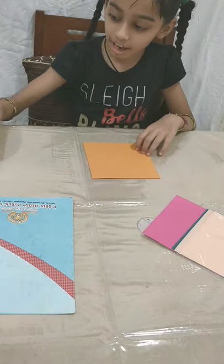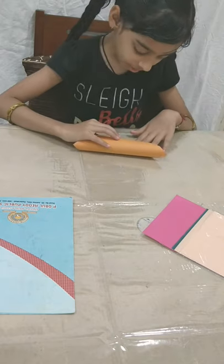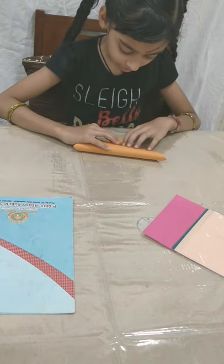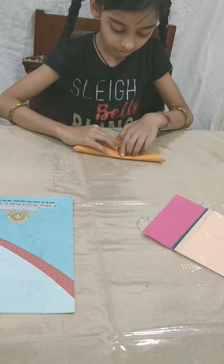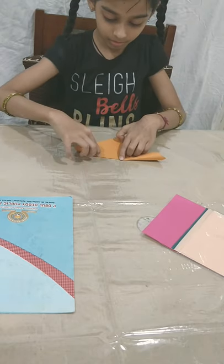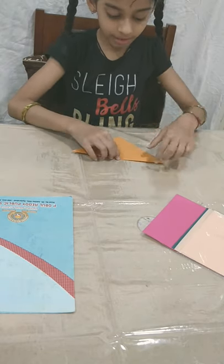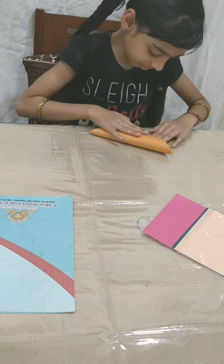First you take the origami paper. Now we have to fold it into half. Next, open it and again fold it into half.